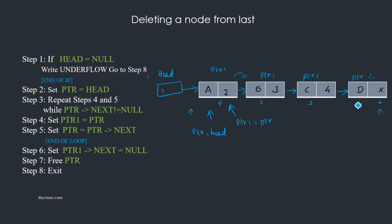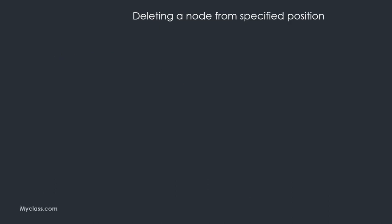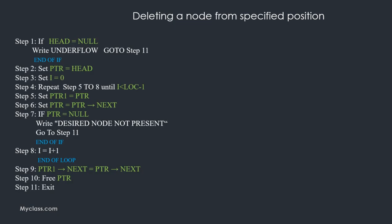When ptr next equals null, ptr is the last node and ptr1 is the second-to-last node. To delete the last node, we set ptr1 next equal to null — making ptr1 the new last node. This severs the connection to the old last node. We then free ptr and exit the algorithm.